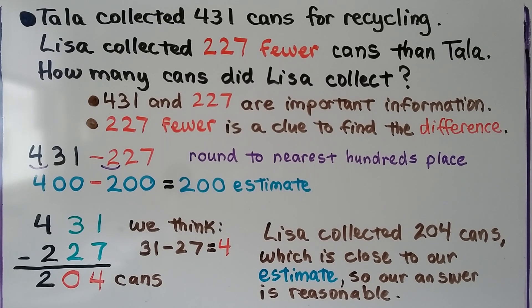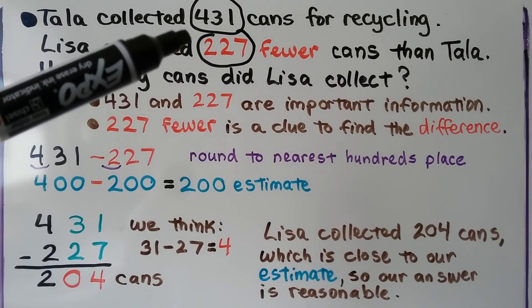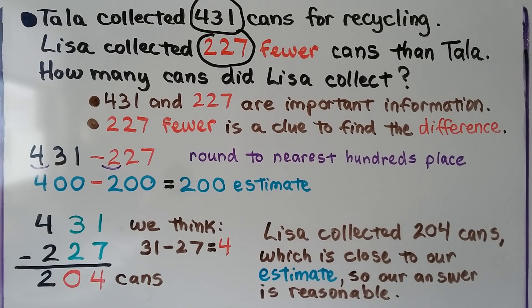Tala collected 431 cans for recycling. Lisa collected 227 fewer cans than Tala. How many cans did Lisa collect? Well, the first thing we do is look for the important information. 431 and 227 are important. We circle the important information to make sure we know they're there.